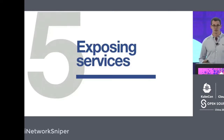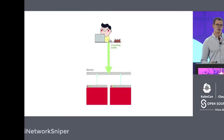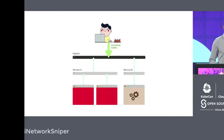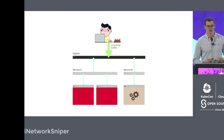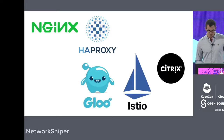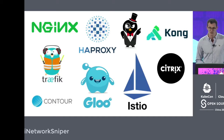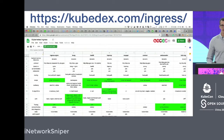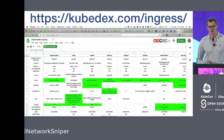Number five is exposing services. You might be familiar with services in Kubernetes — you can have multiple of them, with an external load balancer called the ingress. You could have several ingresses; the most famous one is Nginx, but you can have as many as you want. So which one should you choose? Well, it depends — just spend the time and select the right one.